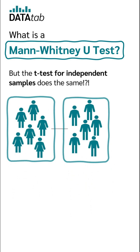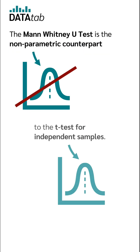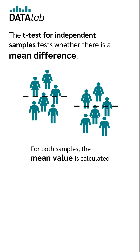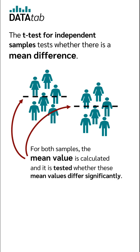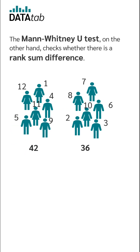But the t-test for independent samples does the same. The Mann-Whitney test is the non-parametric counterpart to the t-test for independent samples. The t-test for independent samples tests whether there is a mean difference. For both samples, the mean value is calculated and it is tested whether these mean values differ significantly.